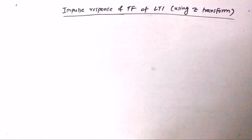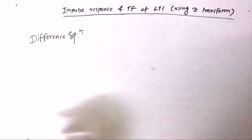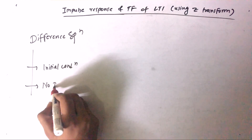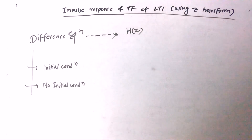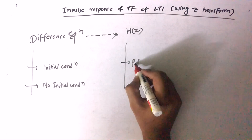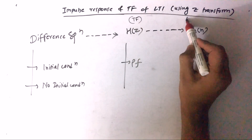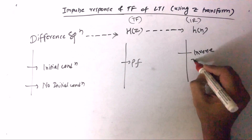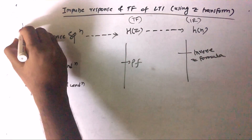To summarize the first variety of question on impulse response and transfer function of LTI using Z-transform: we start with a difference equation, which may have initial conditions or not. From the difference equation we find H(Z). At H(Z) we apply partial fractions. From H(Z) we find H(N) — the impulse response — using inverse Z-transform formulas.